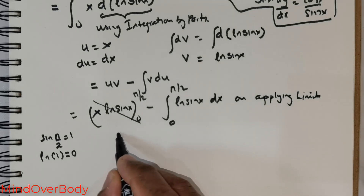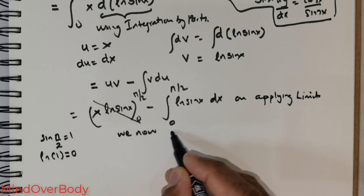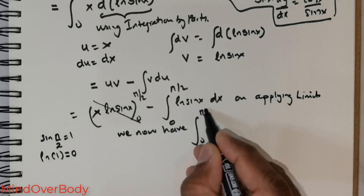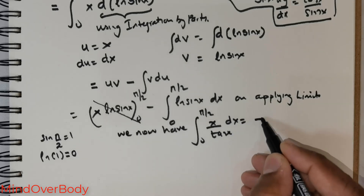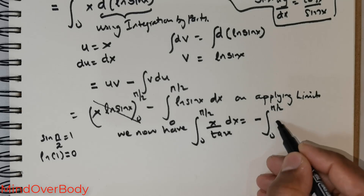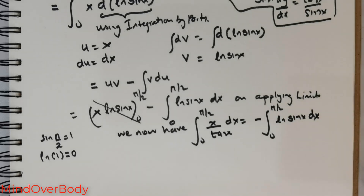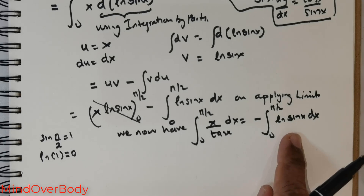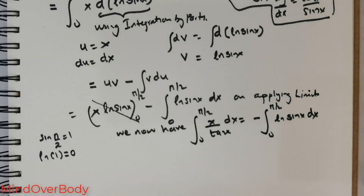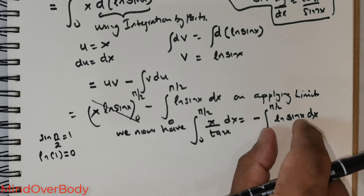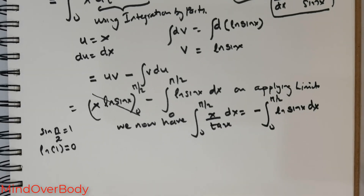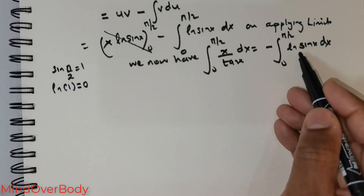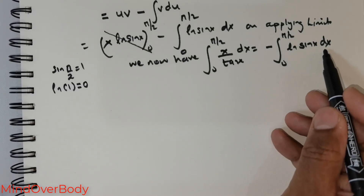We now have the integral from 0 to π/2 of x/tan(x) dx equal to negative the integral from 0 to π/2 of ln(sin x) dx. So we need to evaluate ∫₀^(π/2) ln(sin x) dx. Let me consider this integral exclusively, find its value, and then substitute it back.